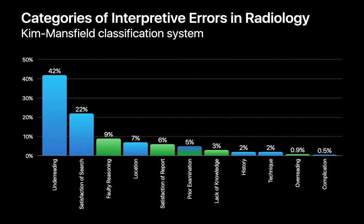If you plot these 11 kinds of interpretive errors on a Pareto chart, you can see that three kinds of errors — under-reading, satisfaction of search, and faulty reasoning — account for almost three-quarters of all interpretive errors by radiologists.